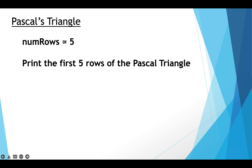Given a variable num_rows, print that number of rows from the start of Pascal's triangle. So if we assume num_rows is five, then we need to print the first five rows of the Pascal's triangle, and this we are going to do using dynamic programming.